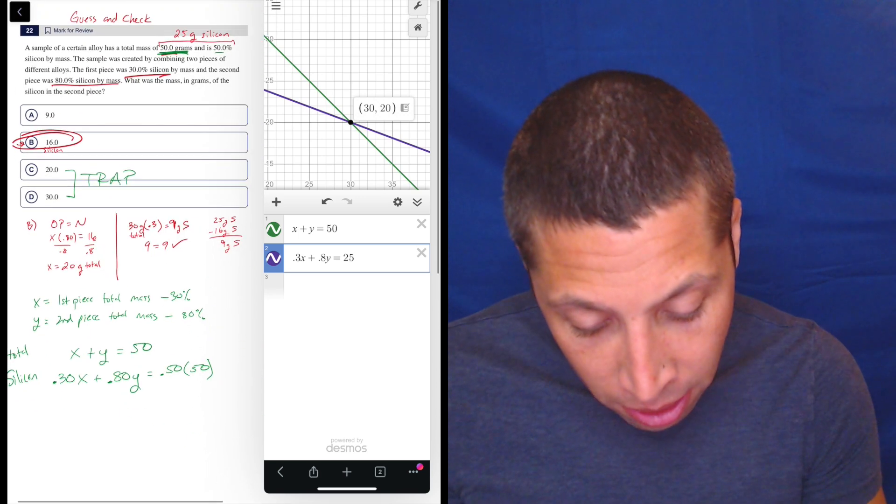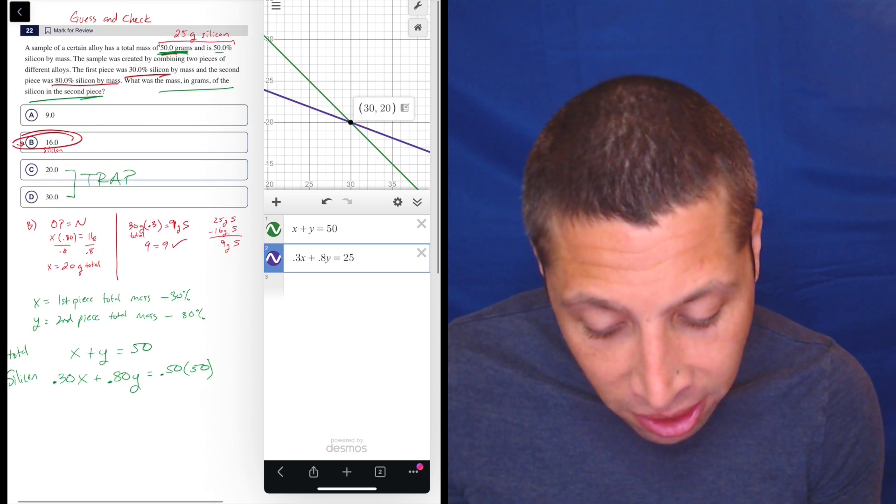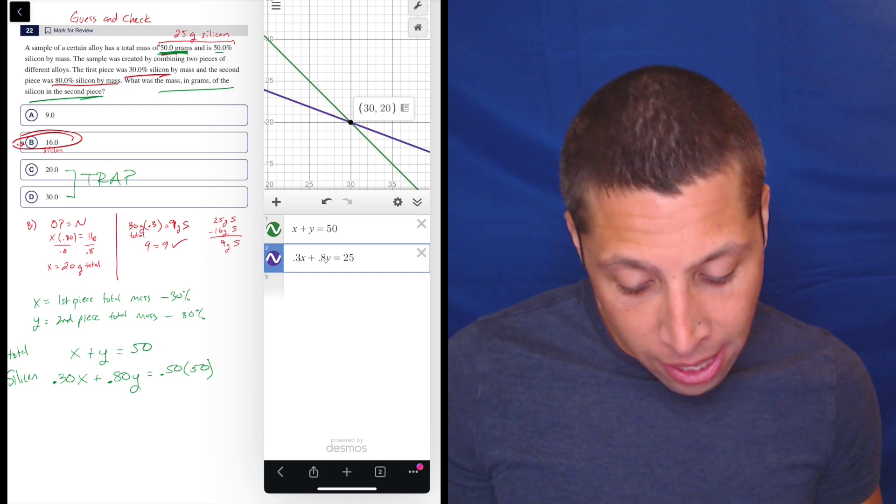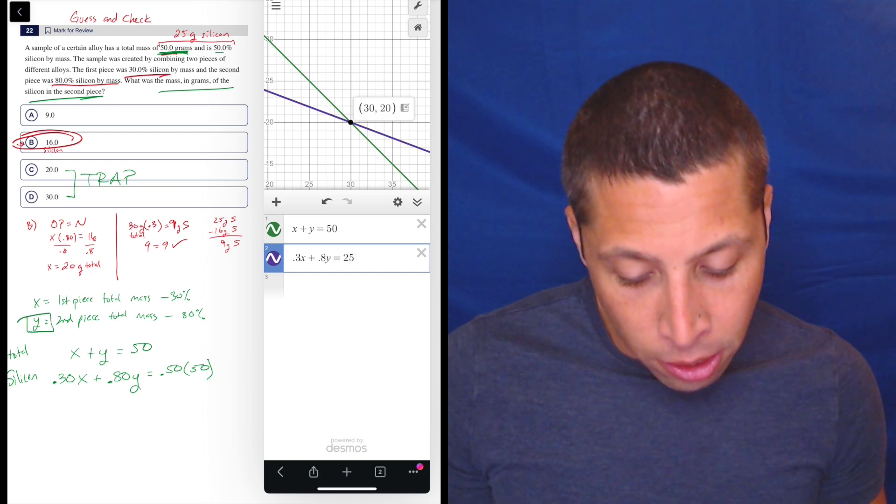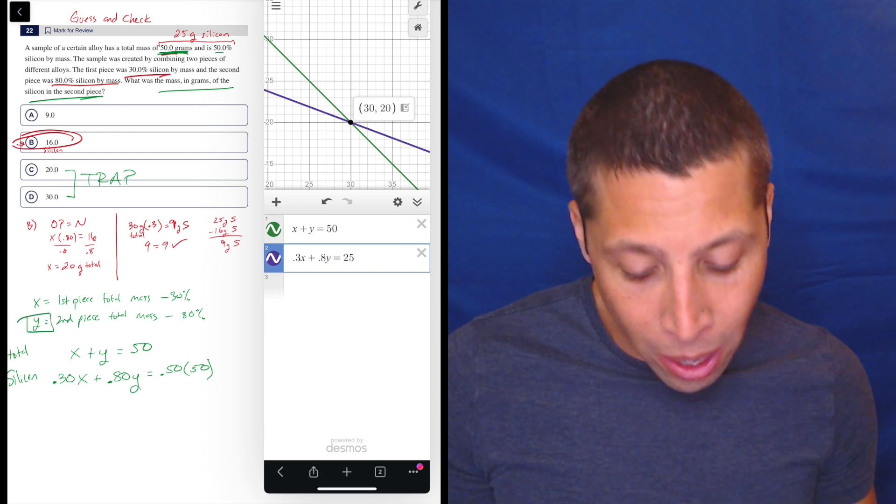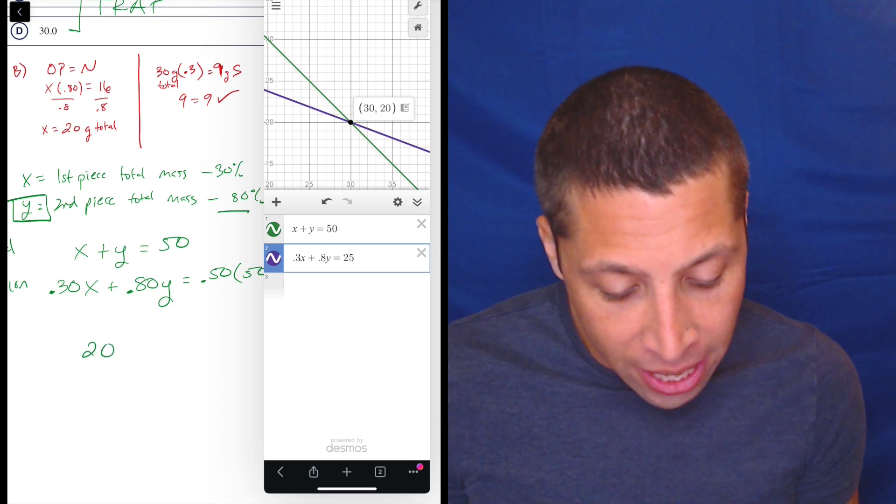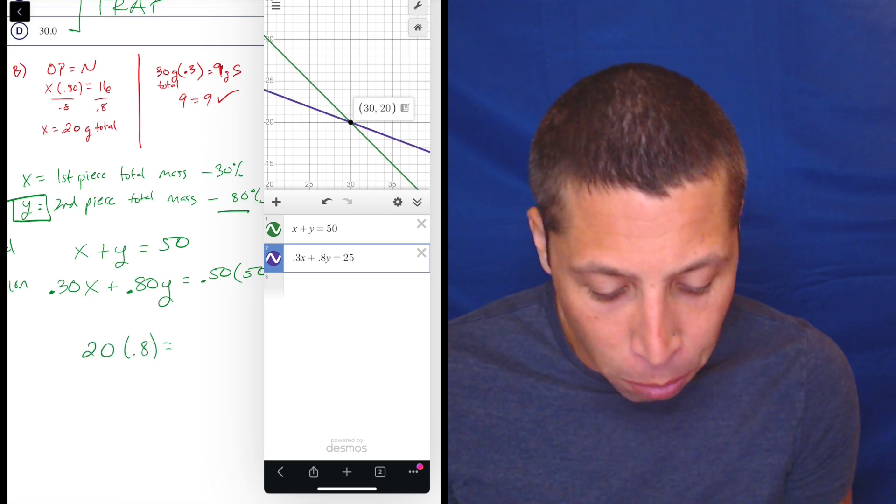Right? What do they really want? They wanted the mass of silicon in the second piece. So the second piece is the y. So the second piece is the 20. So if we took that 20 and we know that it's 80% silicon, we would just multiply by 0.8.